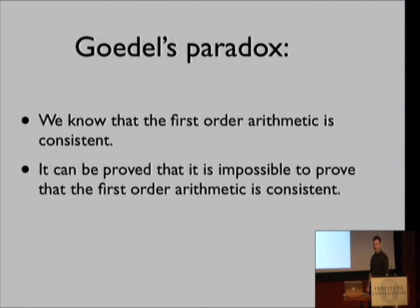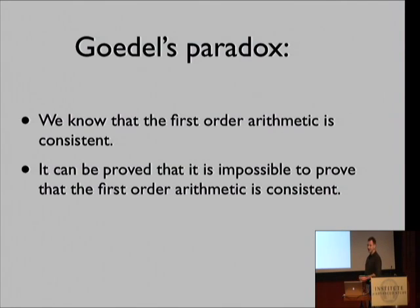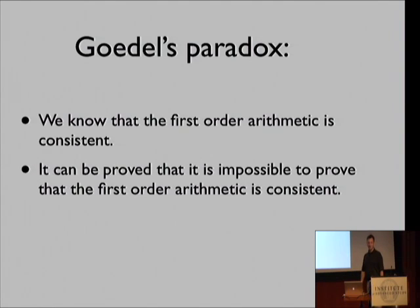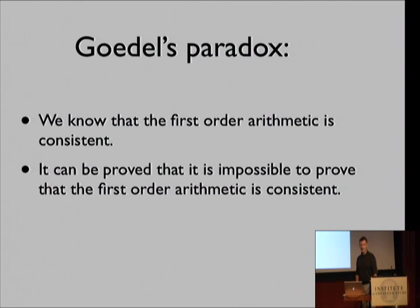Let's see how things developed after that. We have something I'm choosing to call Gödel's paradox. On the one hand, we know — and I should put quotes around 'know' — that the first-order arithmetic is consistent. That's the commonly accepted fact among mathematicians and as a consequence among everybody else. On the other hand, it can be proved that it's impossible to prove that it is consistent. If one really thinks deeply about it, this is extremely unsettling for any rational mind.